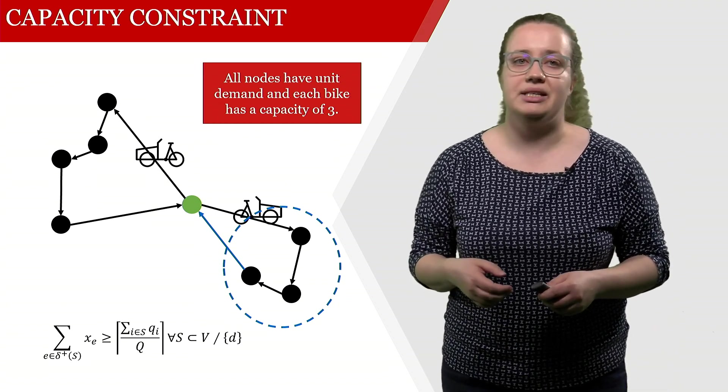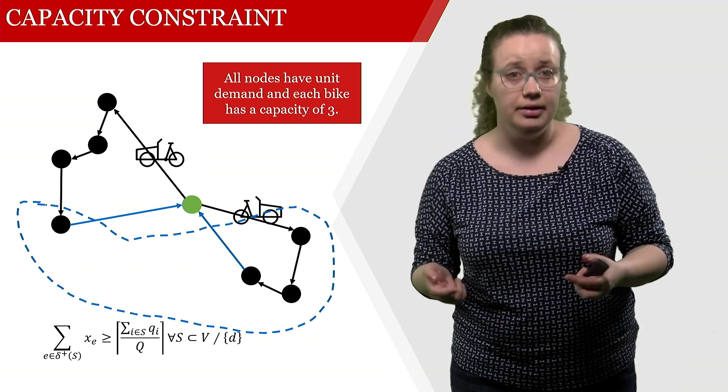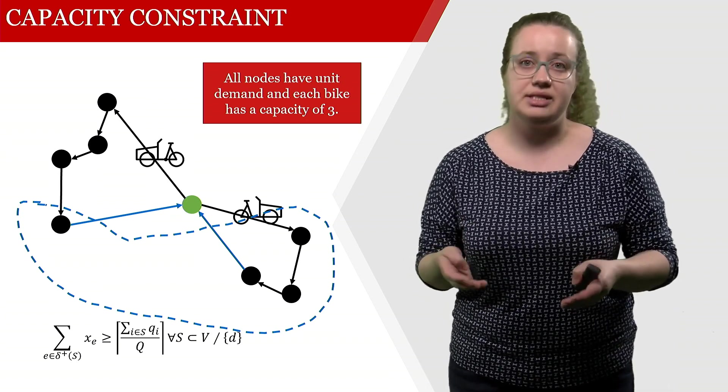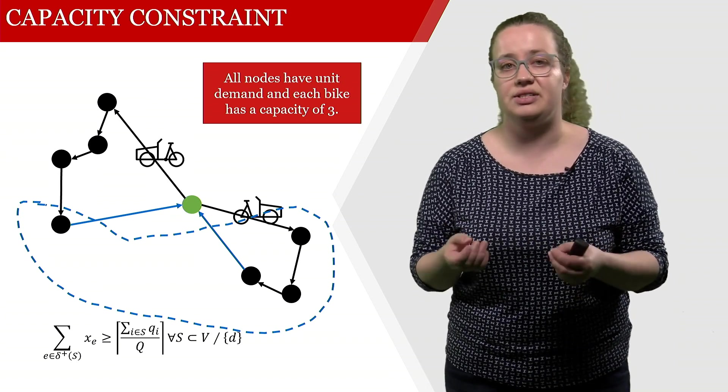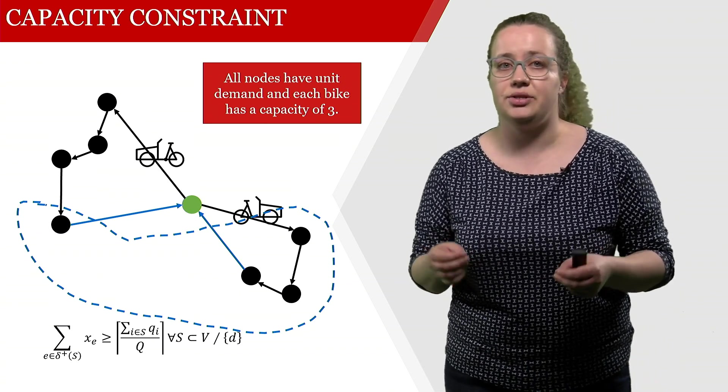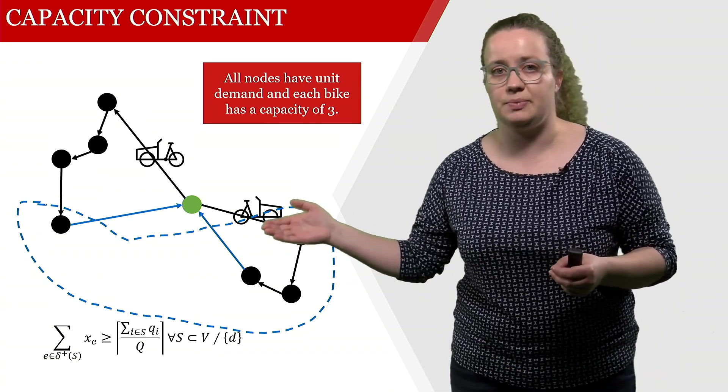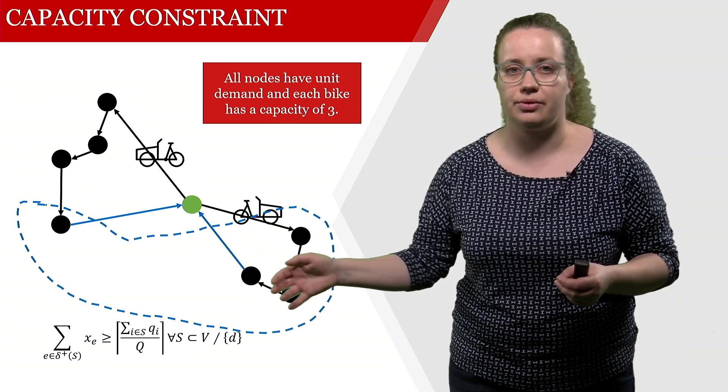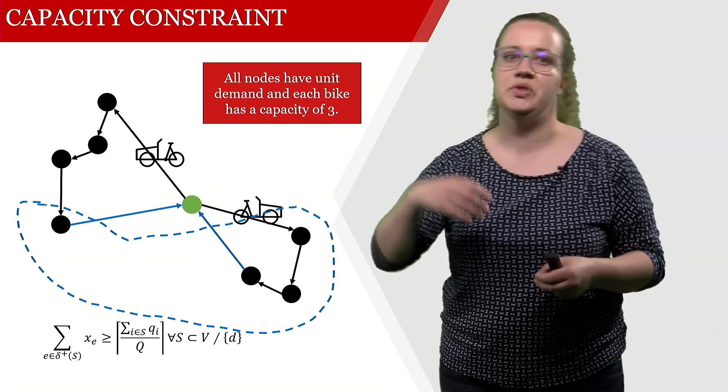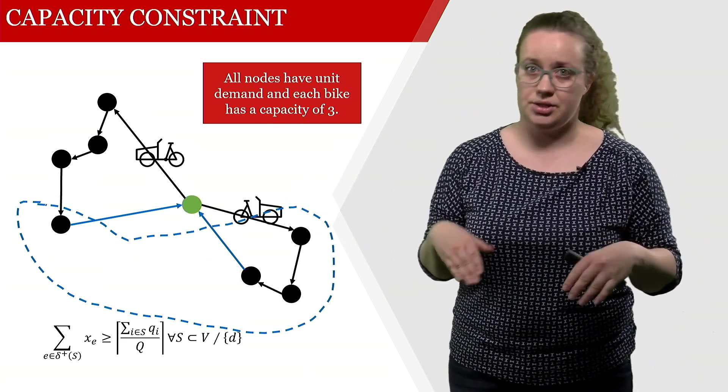It gets slightly more problematic if we look at this one here, but we also still see that for this subset nothing is violated. Here we have a demand of four within this blue subset: one, two, three, and four over there. We divide this by three, so we have four over three.